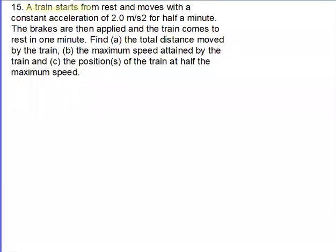A train starts from rest and moves with a constant acceleration of 2 meter per second square for half a minute. Brakes are then applied and the train comes to rest in 1 minute. Find: total distance moved by the train, maximum speed attained by the train, and positions of the train at half the maximum speed.